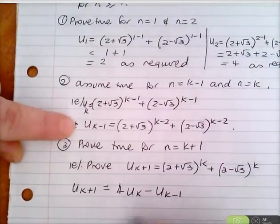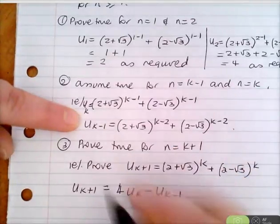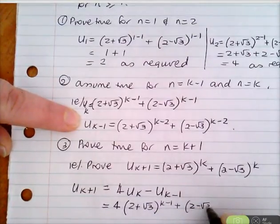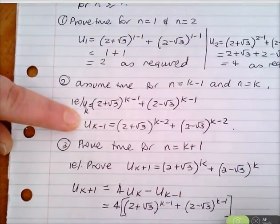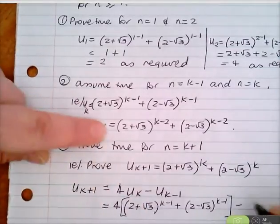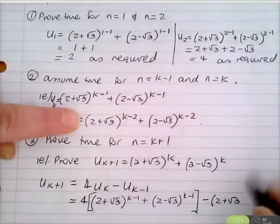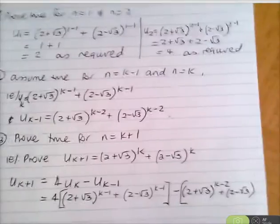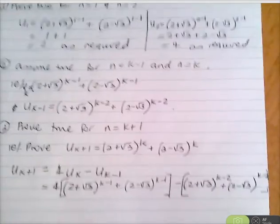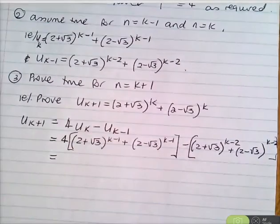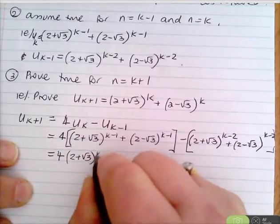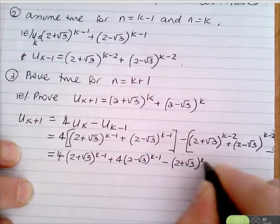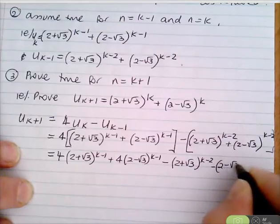Using our assumptions, u_{k+1} = 4[(2+√3)^{k−1} + (2−√3)^{k−1}] − [(2+√3)^{k−2} + (2−√3)^{k−2}]. Expanding: 4(2+√3)^{k−1} − (2+√3)^{k−2} + 4(2−√3)^{k−1} − (2−√3)^{k−2}.